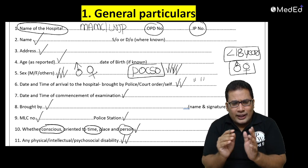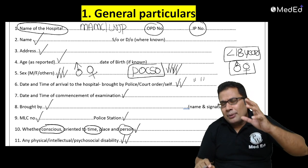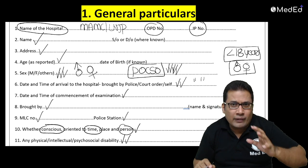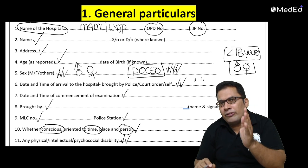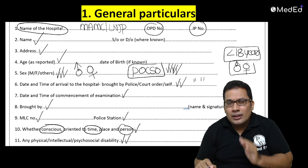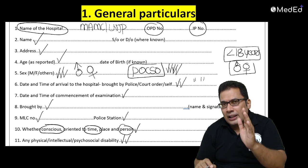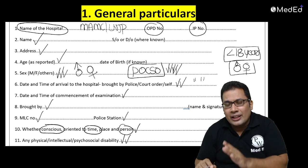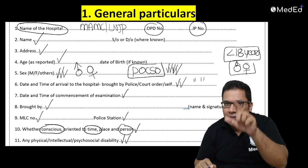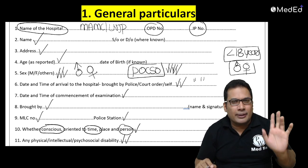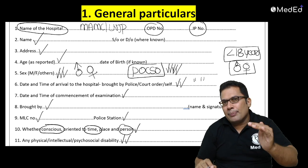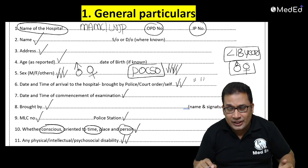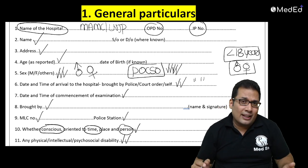To repeat: the examination of accused of rape or sexual violence comes under 52 BNSS. Previously it was 53A CRPC — remember, A for accused of rape. Questions can be asked about 52 BNSS or 53A CRPC.